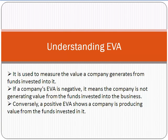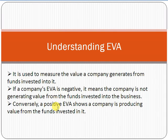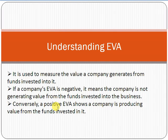EVA is used to measure the value a company generates from the funds invested into it. If a company's EVA is negative, it means the company is not generating value from the funds invested in the business. If EVA is positive, it shows the company is producing value from the funds invested. Negative means the company is not getting more value compared to its investment funds.